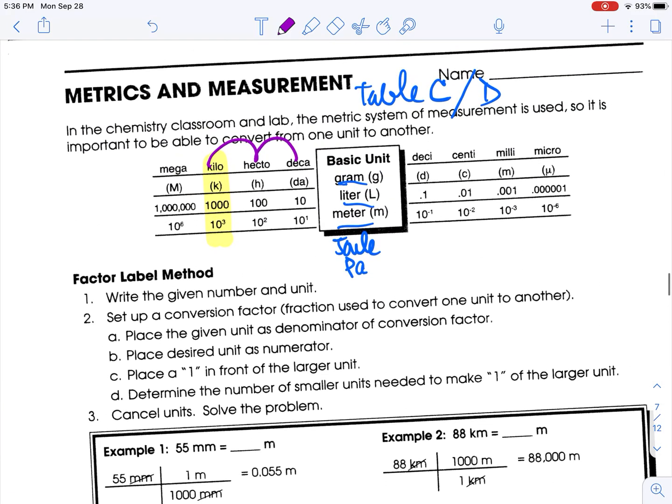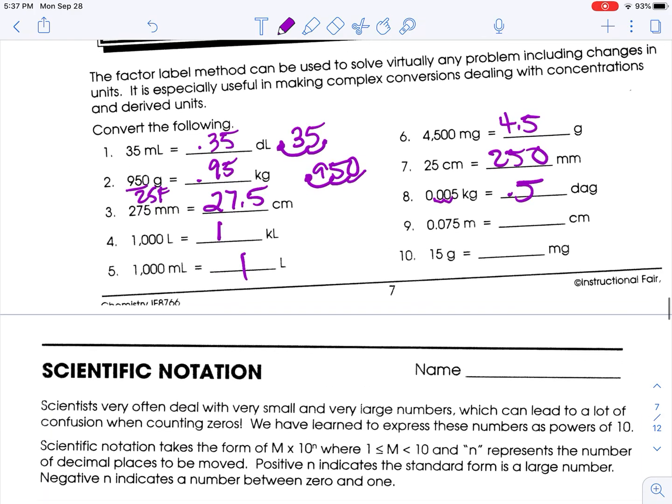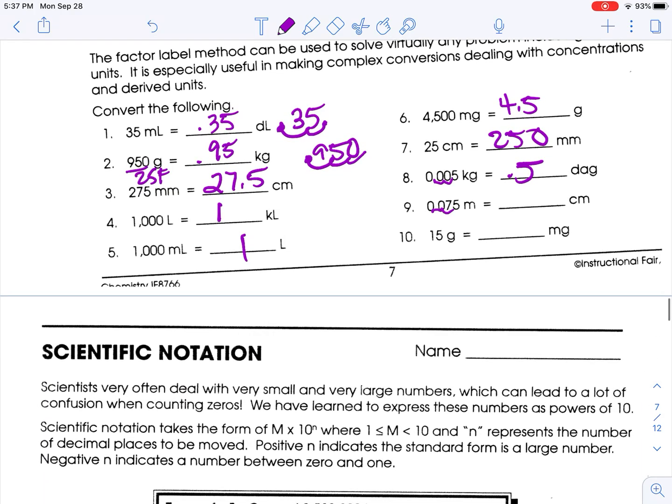Meters to centimeters. Meters is base. So one, two spots to the right. So one, two, seven point five.